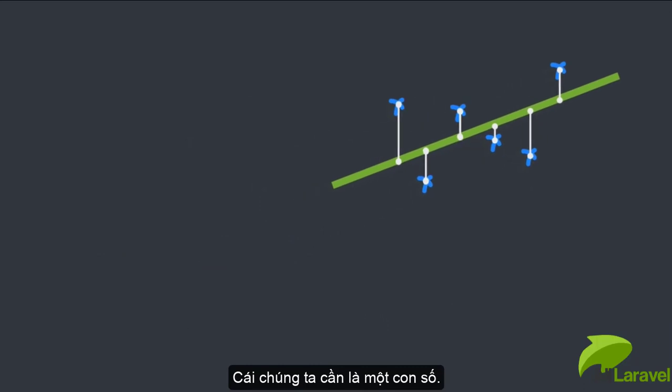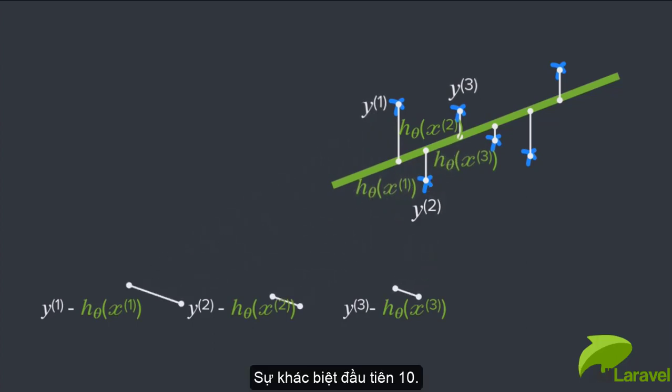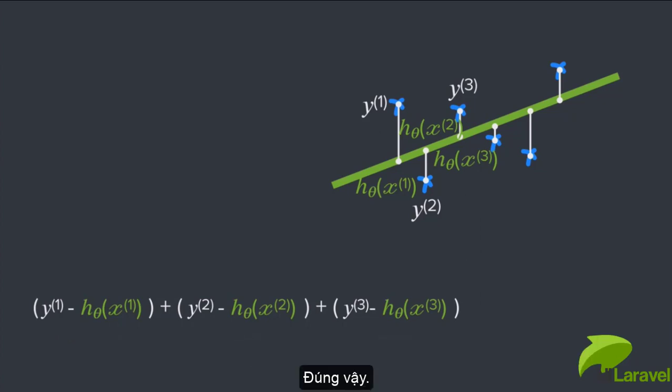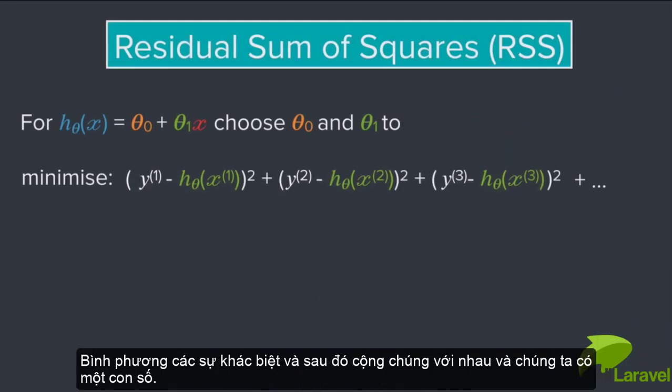Now all we have to do is construct some sort of metric from that. What we need is a single number. And in this case, the number is going to look like this. What we're going to do is we're going to add up all the differences between the line and the data points. So the first difference might be 10. The second difference might be negative 6. The third difference might be 4. But because, you know, a data point below the line will have a negative value, right, that minus 6, what we're going to have to do is square them. So we're going to square all these differences and then add them up.